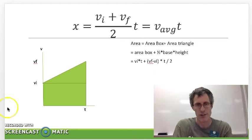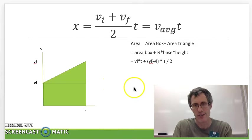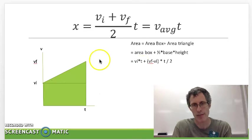And in this case you would find the area of this box underneath here and you would add it to the area of this triangle. And if you did that here the area of the box is vi times t and the area of the triangle is 1 half base times height which is the difference in velocities times time over 2.